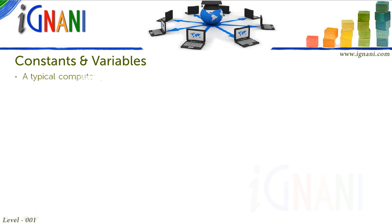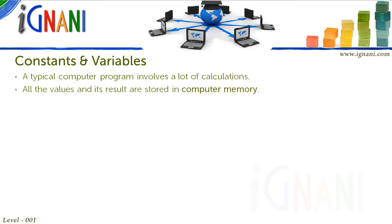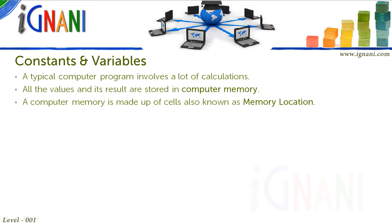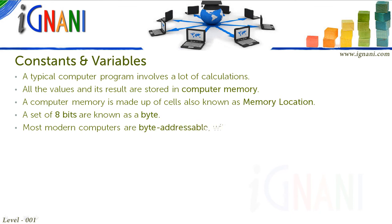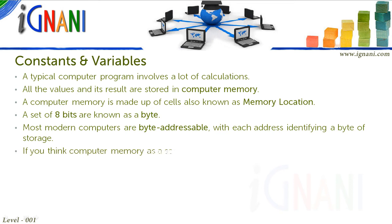A typical computer program involves a lot of calculations. All the values and their results are stored in computer memory. A computer memory is made up of cells, also known as memory locations. A set of 8 bits is known as a byte. Most modern computers are byte addressable, with each address identifying a byte of storage. If you think of computer memory as a series of bytes, each address in the memory holds one byte.